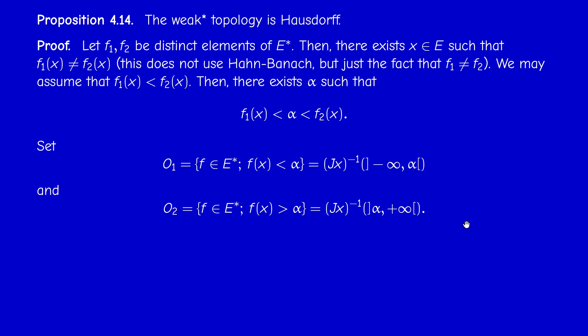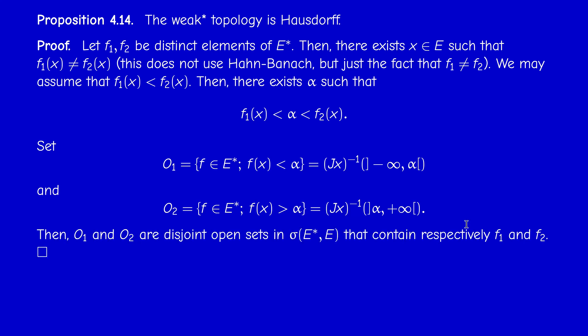By definition, J(x) is continuous with respect to the weak-star topology; therefore O₁ and O₂ are open in the weak-star topology. O₁ contains f₁ because f₁(x) < α, and O₂ contains f₂ because f₂(x) > α. We have found disjoint neighborhoods O₁ of f₁ and O₂ of f₂ in the weak-star topology.